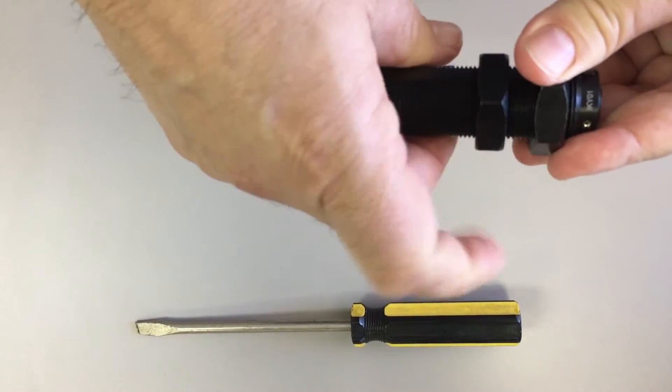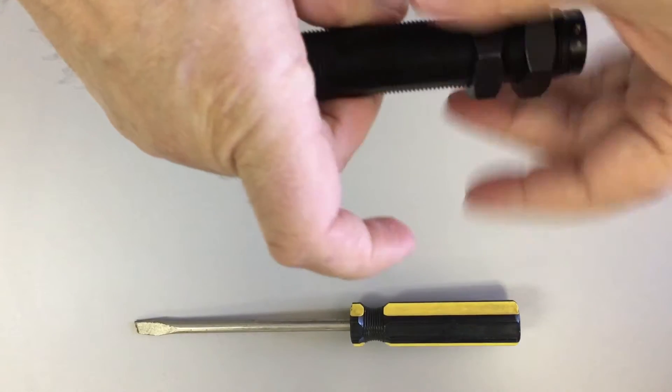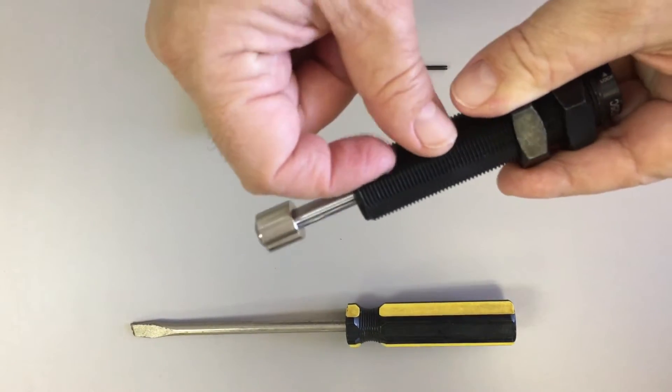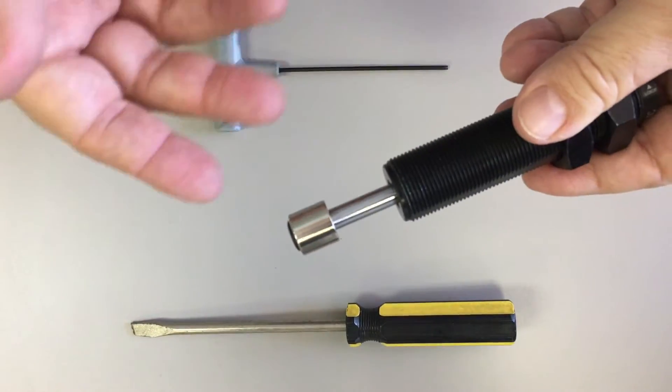And these adjustment nuts allow you to mount anywhere along the body length wherever you need to mount your shock in order to adjust for your impact.